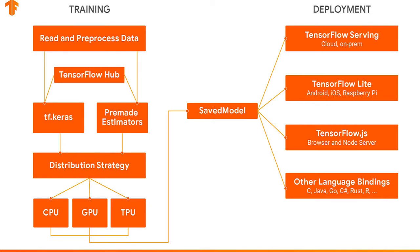If you recently updated your Android phone and noticed it's much quicker to register what you're saying when you speak into it, it's because instead of pinging a server, the model is now directly on-device. All your data never leaves your phone — it stays constrained to the local environment. If you have a Pixel 2 or Pixel 3, it's using a GPU directly on-device to do the inferencing. We also have support for many languages: C, Rust, Java, R, C#, and F# language bindings.